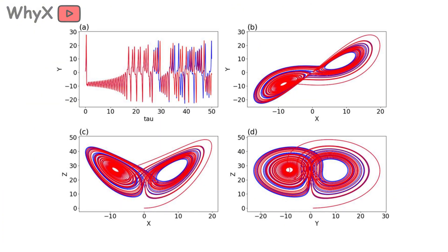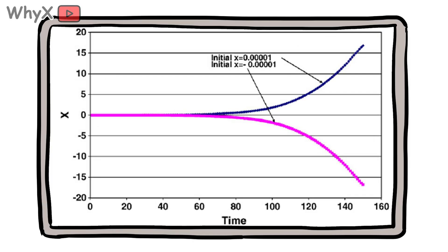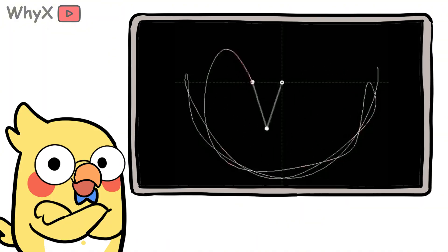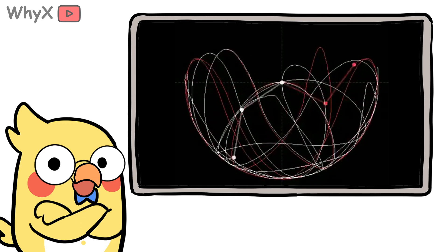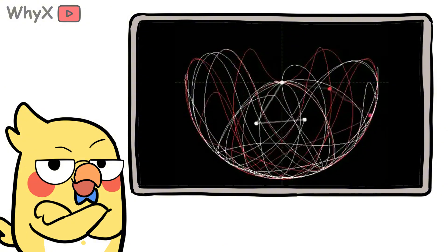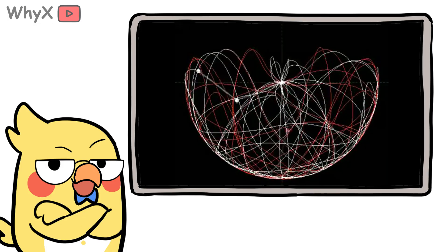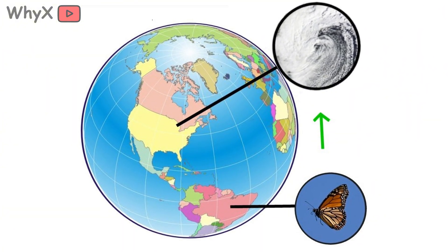Here's the core: in chaotic systems, initial conditions matter enormously. Scientists call this sensitivity to initial conditions. Mathematically, two starting points that differ by a hair's breadth diverge exponentially over time. If you plotted them, they'd start almost overlapping, then split apart until they're unrecognizably different. Try watching a double pendulum — a pendulum with another pendulum attached at its end — start it swinging twice from almost identical positions. At first the motions match, but soon they diverge wildly, one flailing left while the other whirls right. Both obey Newton's laws perfectly, but their paths look unpredictable because tiny initial differences grow exponentially. That's the butterfly effect in miniature, and that's why weather forecasts lose reliability after about 7 to 10 days.